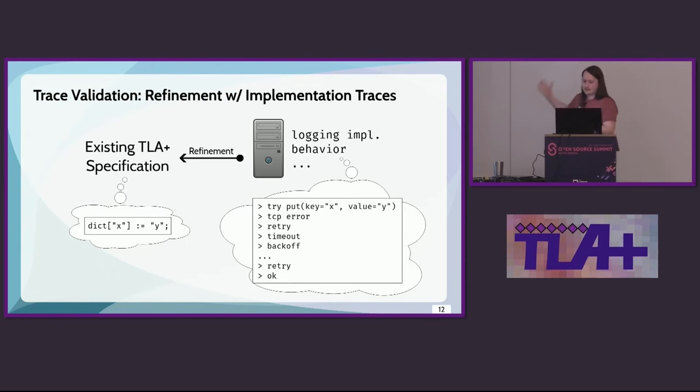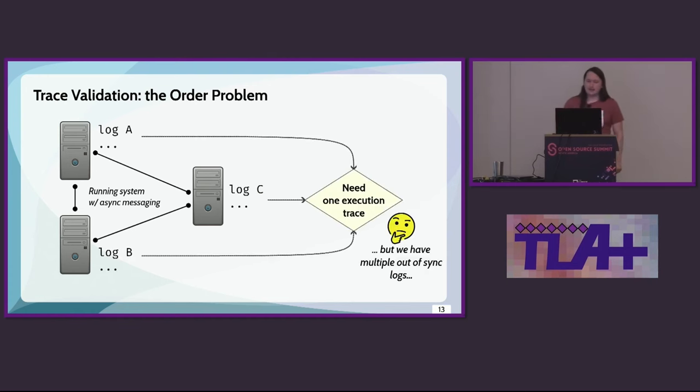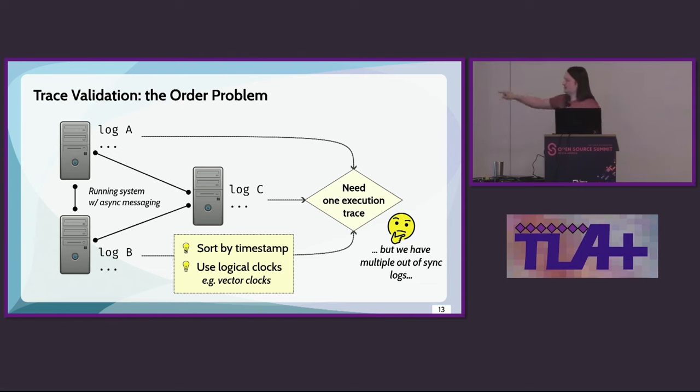So first, let's get into trace validation and we'll cover all of these more or less. So, what is this? Again, I think we kind of remember, but I'll reiterate. We have some existing TLA plus specification and we have some implementation which will produce a bunch of data and we want to express a refinement between the two. So, problem one. And again, I'm realizing you might be having a little bit deja vu here. So, I'll keep this efficient. You've got the order problem. You've got a running system with a bunch of asynchronous messaging. And imagine you're getting logs A, B, and C and you need one execution trace. But we have a lot of logs that are out of sync. So, okay, what do we do with this? Well, there's the inelegant but would technically work most of the time sort by timestamp. Of course, if we know about clock jittering, then maybe that has issues.